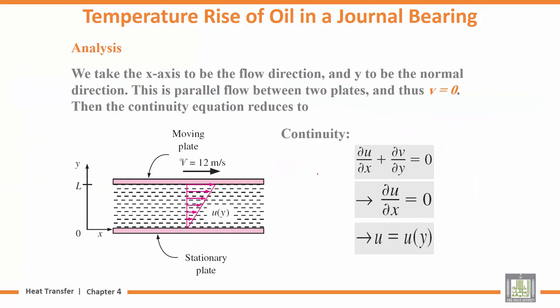We take the x-axis to be the flow direction and y to be the normal direction. This is parallel flow between two plates, and thus v equals zero.